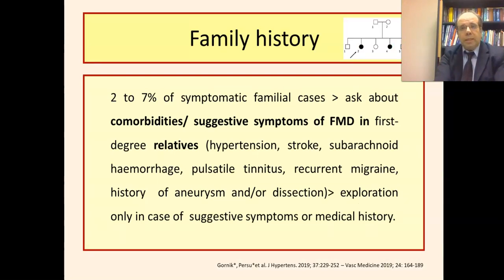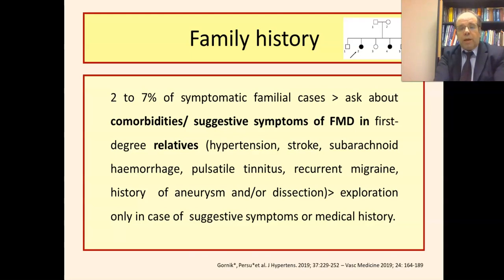FMD is not a genetic disease, though it has a genetic component increasingly under study. Truly familial cases are rare — 2 to 7% according to registries. Therefore, systematic family screening is not recommended, but we ask about comorbidities and suggestive symptoms in first-degree relatives: hypertension, stroke, subarachnoid hemorrhage, pulsatile tinnitus, regular migraine, history of aneurysm or dissection. Exploration is only recommended in case of suggestive symptoms or medical history.